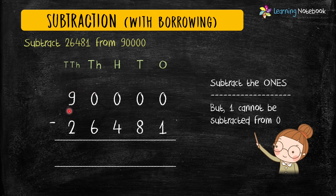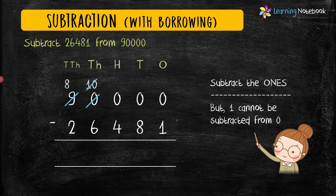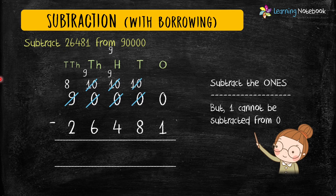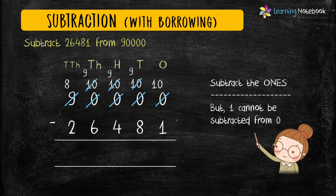Finally, we have 9 at the ten-thousands place. So let's borrow from 9. Therefore 9 becomes 8, and we keep on borrowing all the way down. Finally, 0 at the one's place becomes 10. Now let's subtract: 10 minus 1 equals 9.